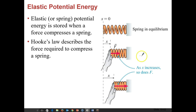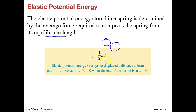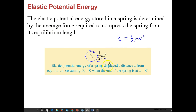Elastic potential energy — also called spring potential energy — is the energy stored when you compress or extend a spring. Hooke's Law describes the force required. The elastic potential energy equation is Us = ½kx², where k is the spring constant and x is the compression or extension distance. This looks similar to kinetic energy (½mv²) but the two are otherwise unrelated.